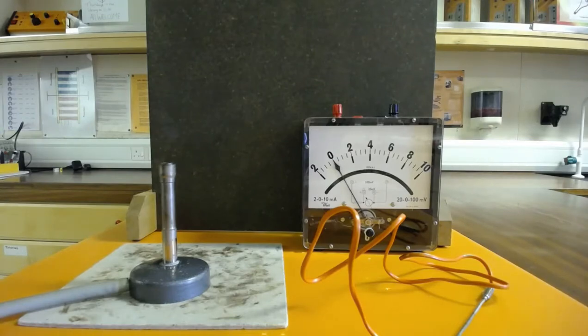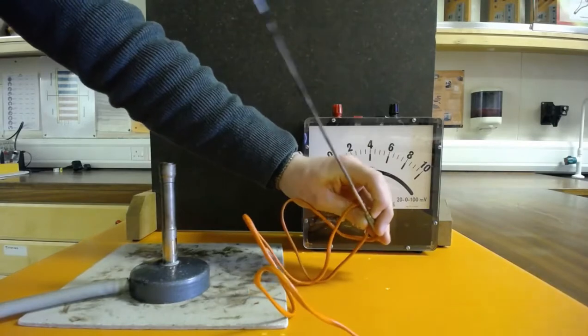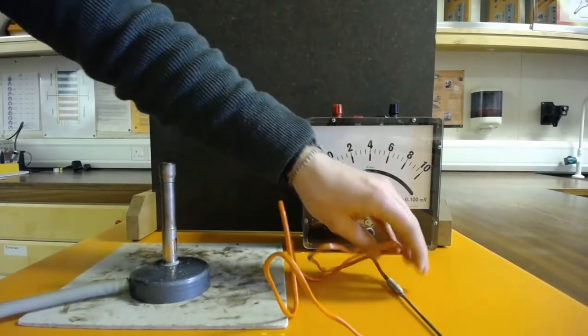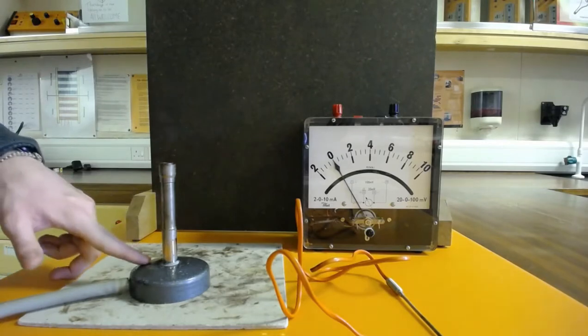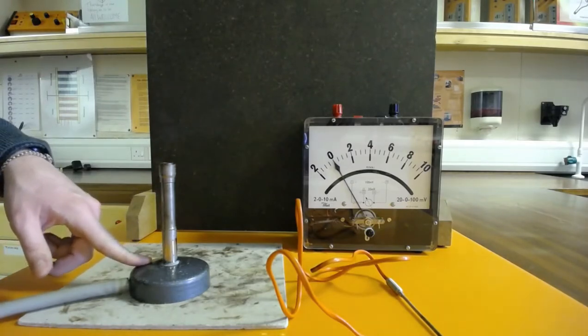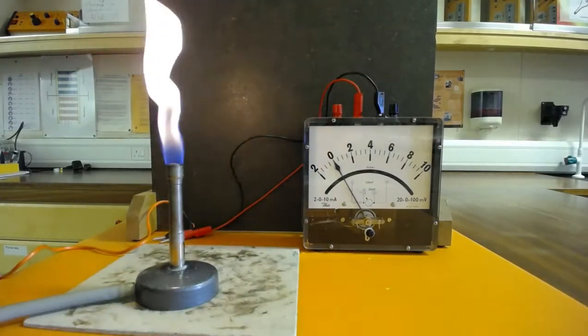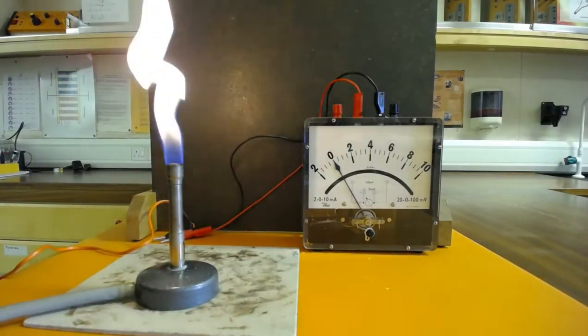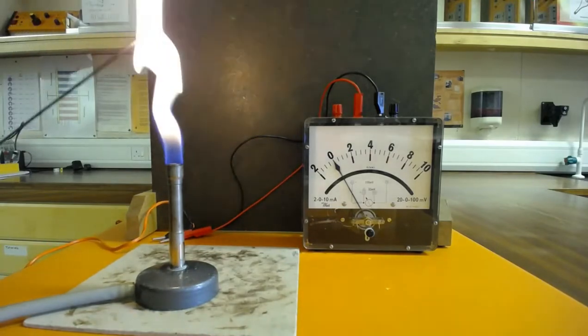The next input transducer is the thermocouple. We're going to connect the thermocouple to the voltmeter and heat it in a yellow Bunsen flame and see what happens. Seeing that the voltmeter is zero, I'm going to put the tip of the thermocouple into the Bunsen flame.